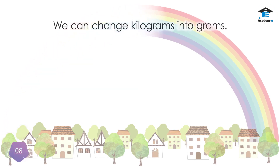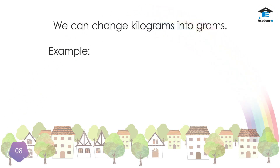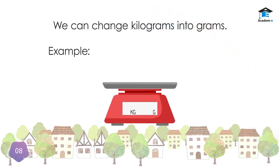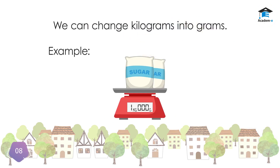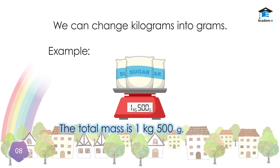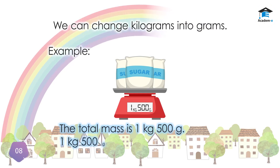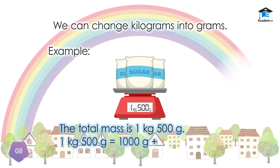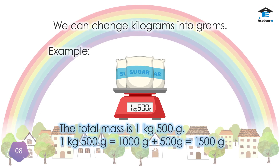We can change kilograms into grams. For example, the total mass is 1 kilogram and 500 grams. 1 kilogram 500 grams is equal to 1,500 grams. When combined, it is 1,500 grams.